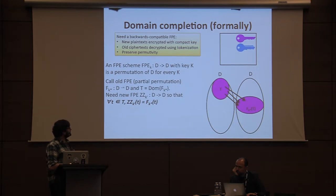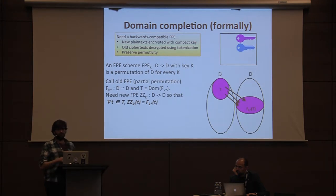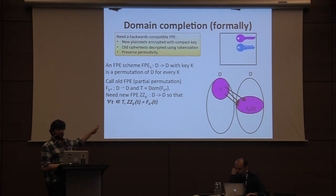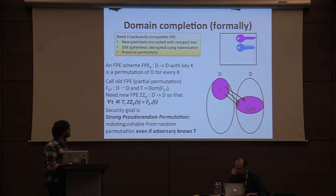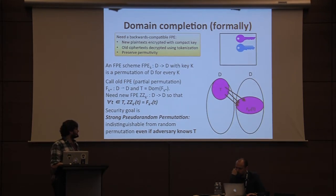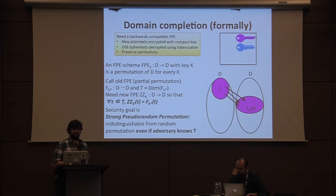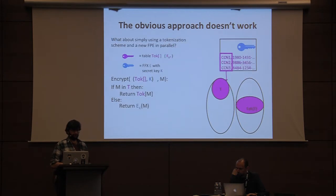The goal is to build a new FPE ZZ_K' over the same set, so that for all points in T the image under ZZ agrees with the image under F. The security goal is the traditional one for FPE: strong pseudorandom permutation security, which says the cipher is indistinguishable from a random permutation. The slight twist for domain completion is that we give the adversary knowledge of T.